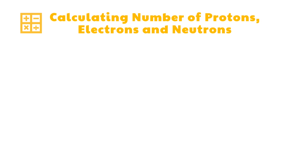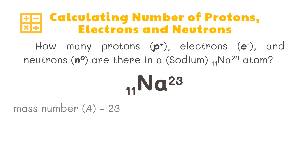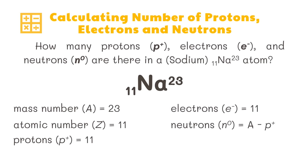Let's try solving for the number of protons, electrons, and neutrons in a sodium atom. The symbol of sodium designates an atom with a mass number of 23 and an atomic number of 11. The number of protons in sodium is 11; the number of electrons is also 11. The number of neutrons equals the mass number minus the number of protons: 23 minus 11, which equals 12.